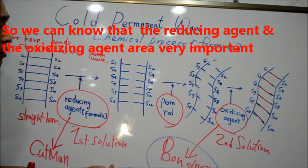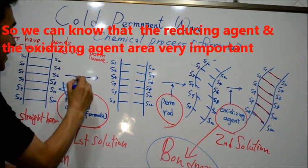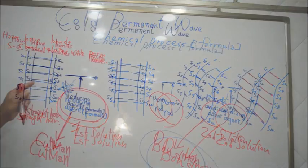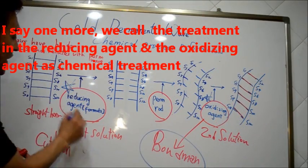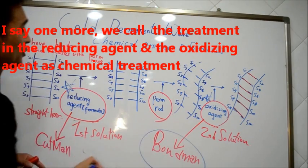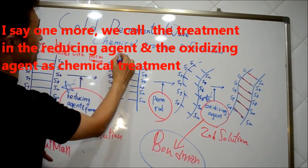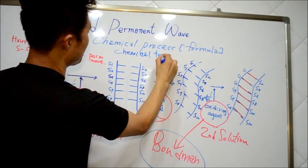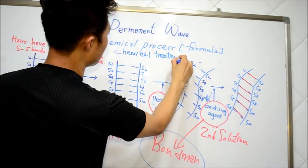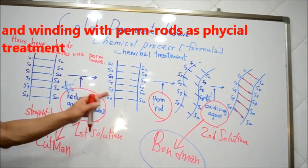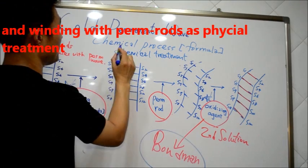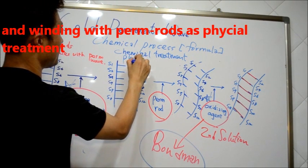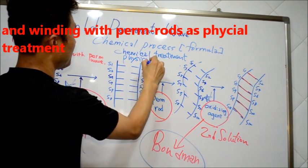So we can know that reducing agent and oxidizing agent are very important. Reducing agent and oxidizing agent we call chemical treatment. And one form of this is physical treatment.